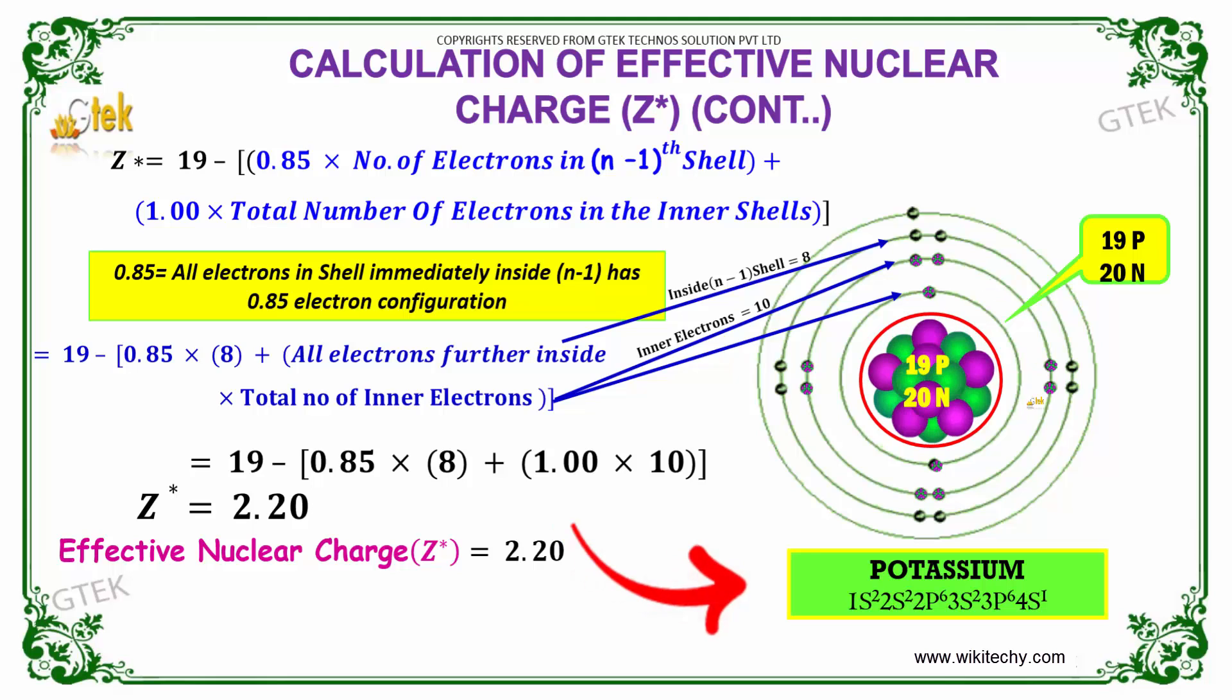This orbital has 8 and this orbital has 8, so it's 10 total. So 1 times 10. We get 19 minus 0.85 times 8 plus 1 times 10. You get a value of 2.20.